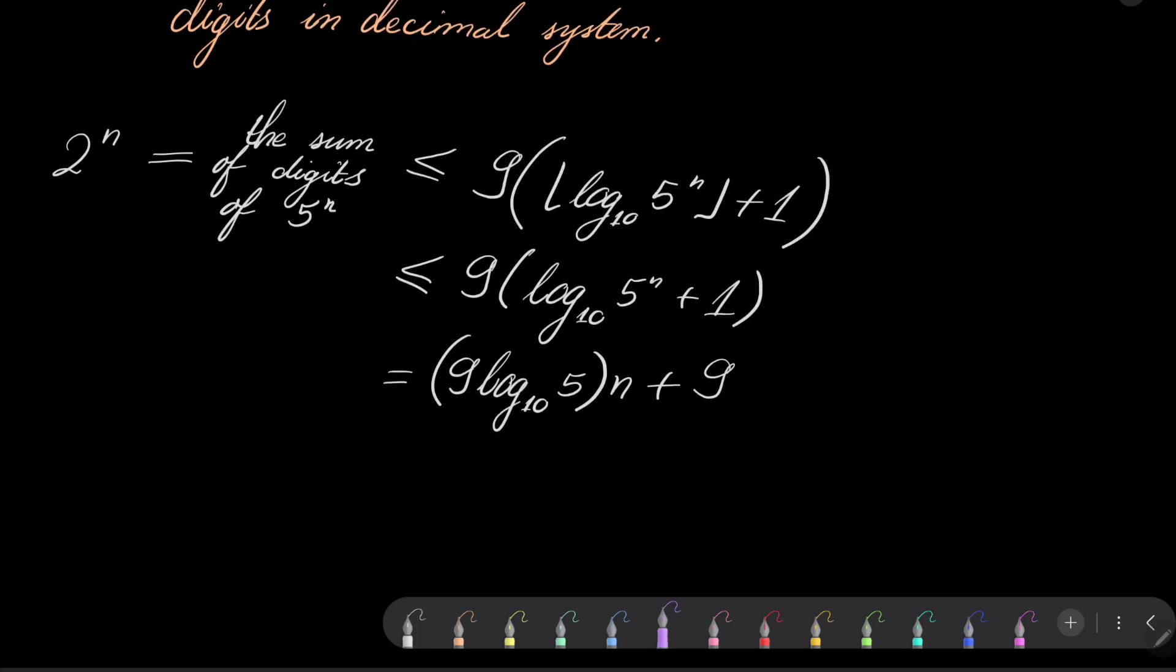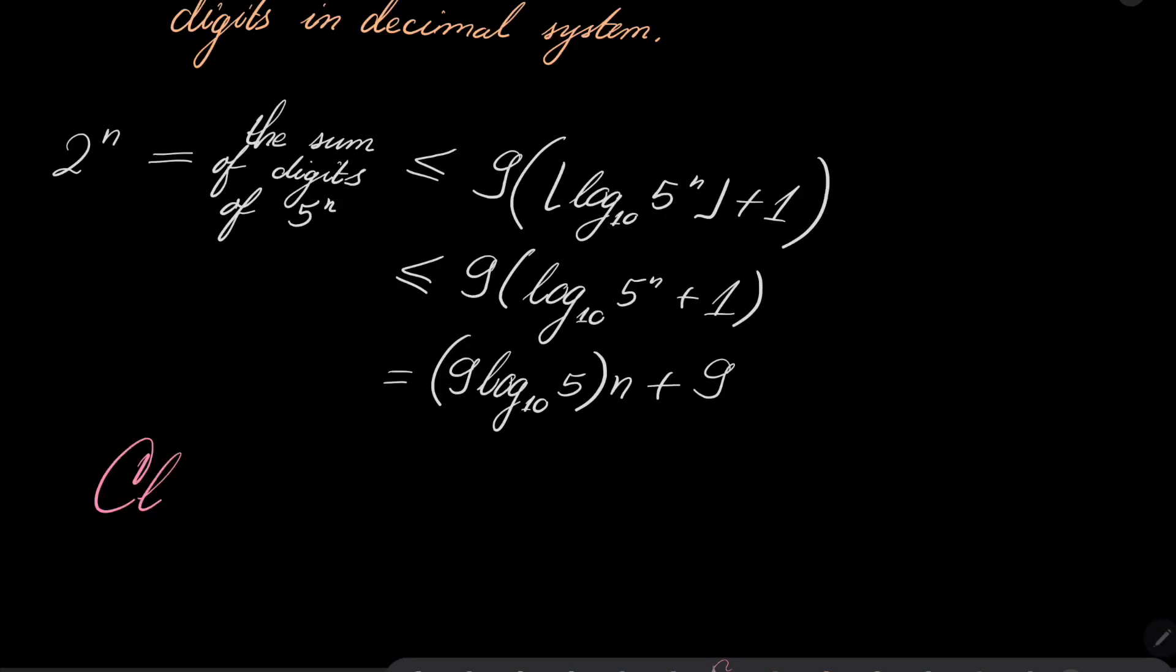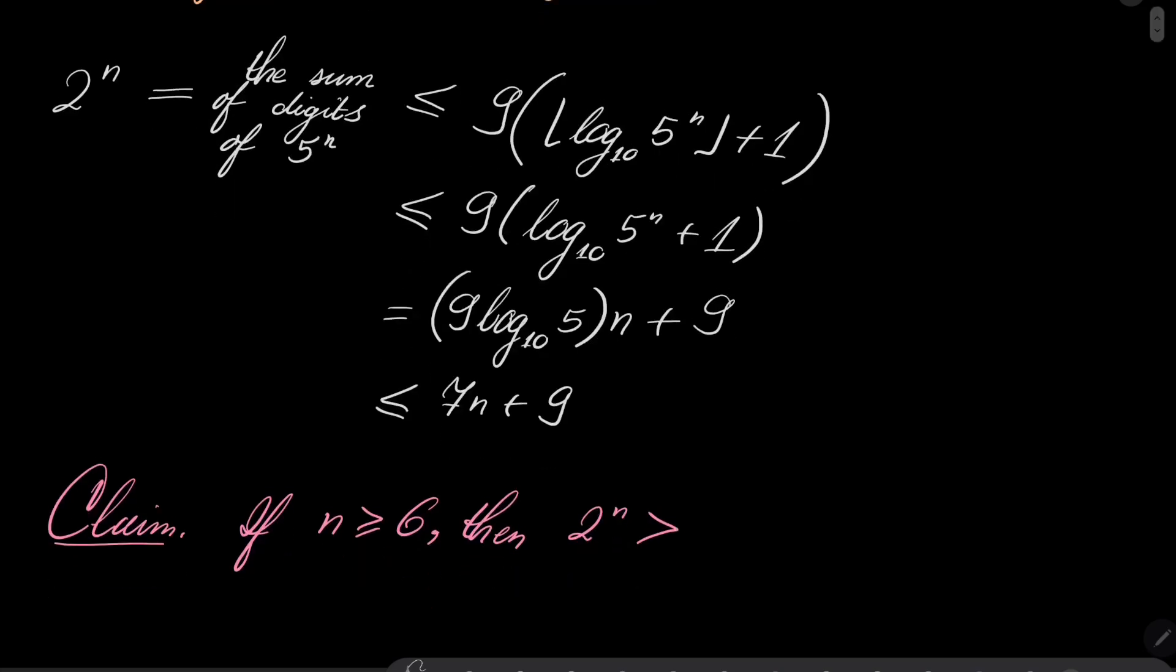But now I claim the following. My claim is that if n is greater than or equal 6, I claim that actually the inequality is reversed. So 2 to the power of n is actually greater than. It can be easily verified that this is less than or equal 7n plus 9. And I claim that 2 to the power of n is greater than 7n plus 9 for n equals 6 onwards.